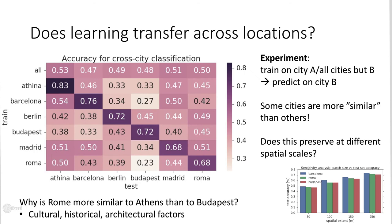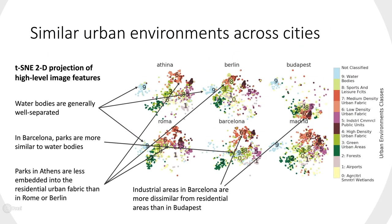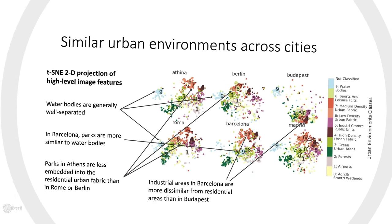One key question we ask in this work is whether learning transfers across geographical locations — that is, can we train a model from data in one city and predict on another? We find that some cities are more similar than others and quantify these similarities at the city and neighborhood levels. To uncover the continuous nature of urban environments, we project the feature vectors extracted from images of urban neighborhoods across six cities onto a lower-dimensional embedding. This highlights how urban environments that are formally assigned to certain classes are either separate, as in the case of water bodies, or group together in a continuous fashion.